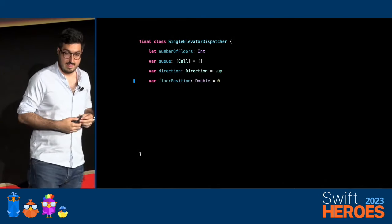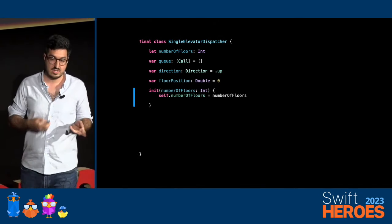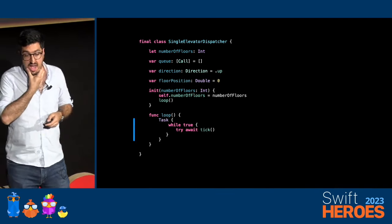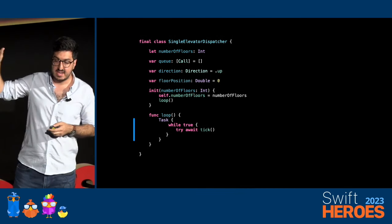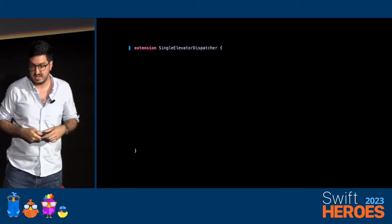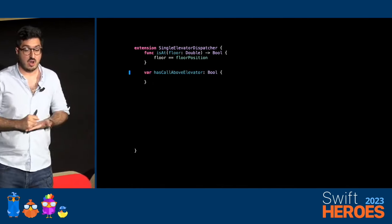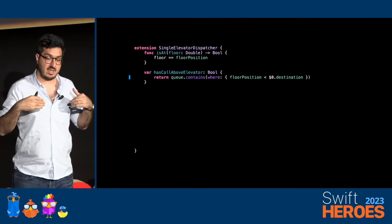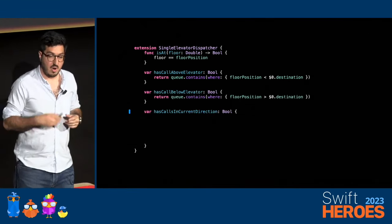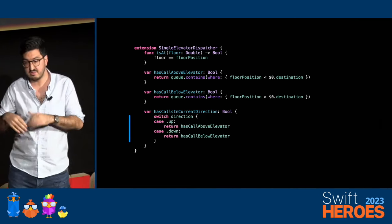The elevator dispatcher is the thing that actually controls the elevator going up and down. It needs to know how many floors are available, who's in the queue — people waiting in the hall and people in the cars — its direction, and its floor position. We initialize by setting up the number of floors and kicking off our loop function. The loop is just a while loop that spins infinitely, and the tick method sleeps for 16 milliseconds — so we update at roughly 60 Hz. More helpers: am I at this floor? Are there calls above the elevator? Calls below? And are there calls in the current direction, combining those checks with which way we're going.